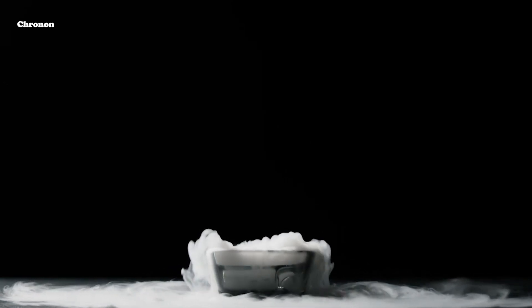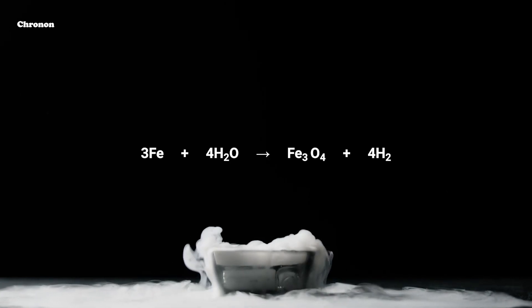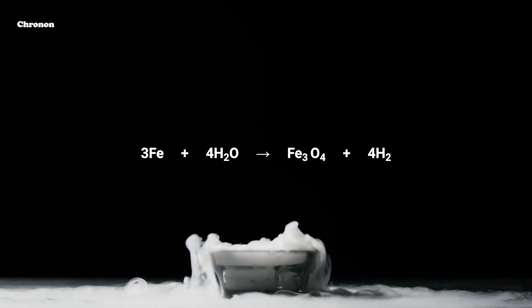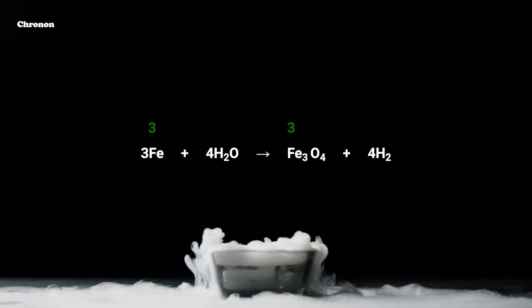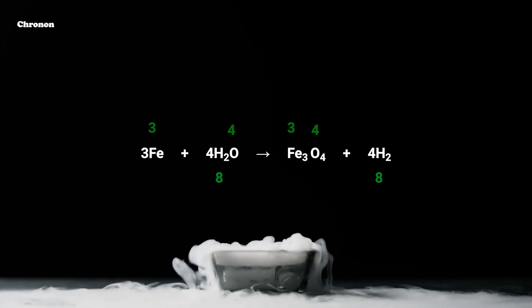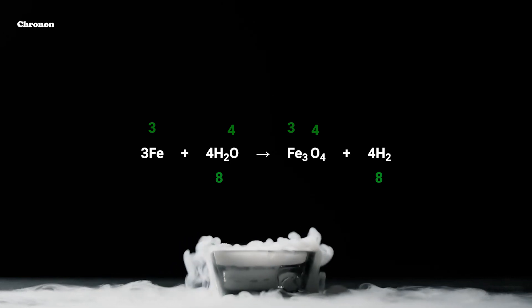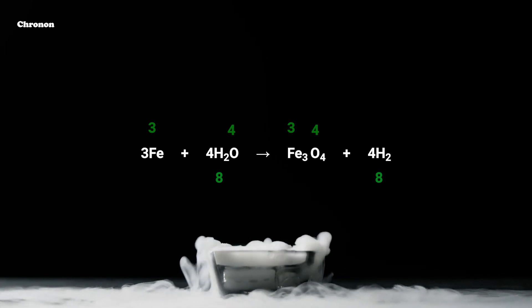Finally, this equation is balanced. To check the correctness of balanced equation, let's count the number of atoms of each element on both sides of the equation once again. We can count that there are 3 iron atoms, 8 hydrogen atoms and 4 oxygen atoms on the left hand side. Now we can say that we have successfully balanced this equation.